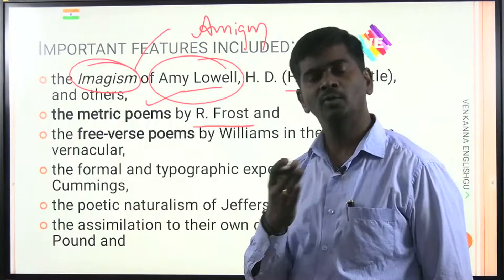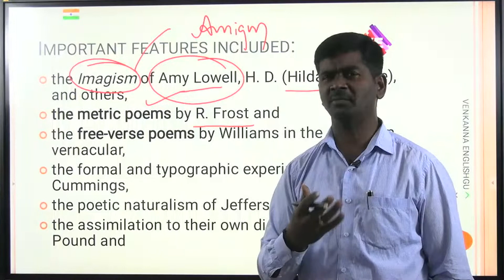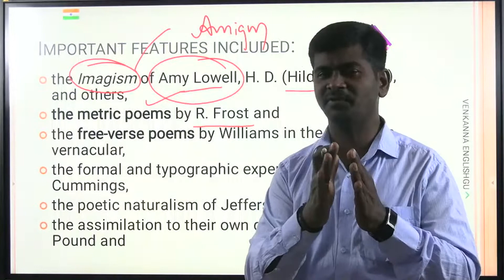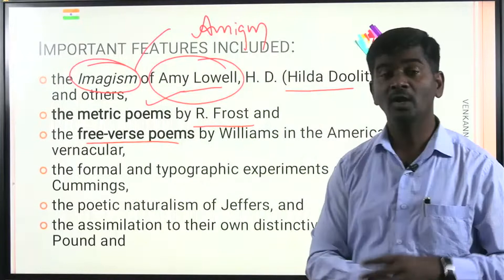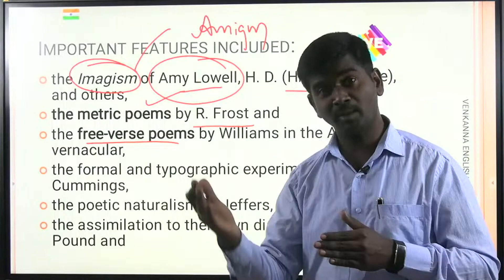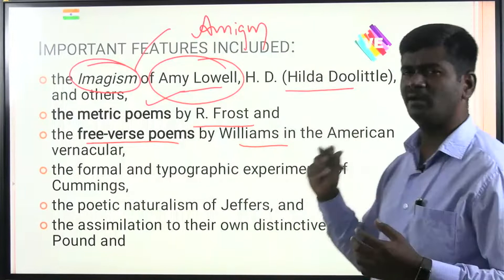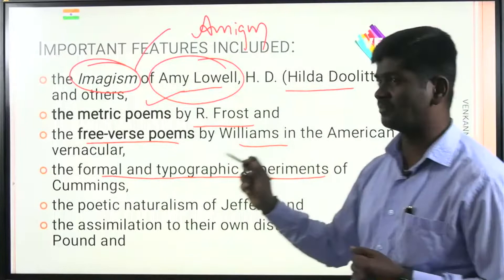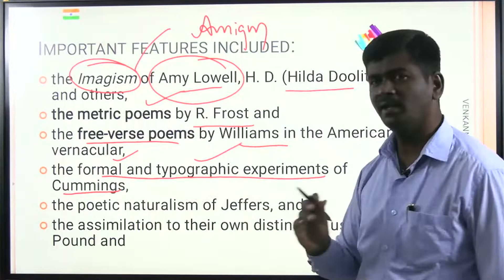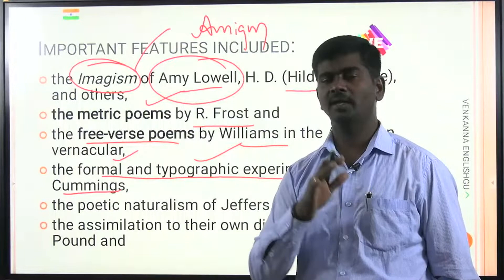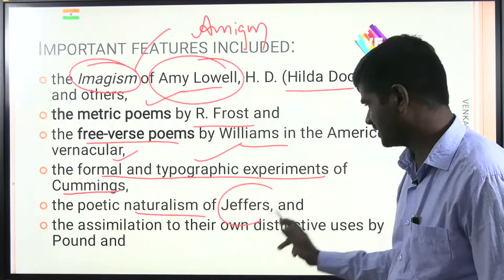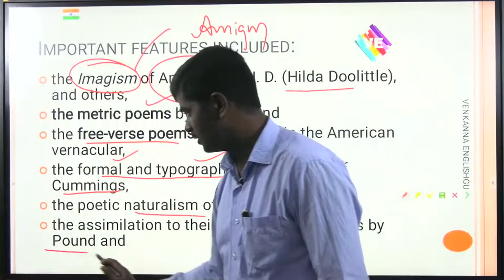Metric poems were popularized by Robert Frost — he is the originator of metric poetry, using different meters such as iamb, anapest, trochee, and various prosodic features. Free verse poems are also important — 'The Waste Land' is composed in free verse. Free verse poetry was also composed by William Carlos Williams in American literature. E.E. Cummings is known for formal and typographical experiments, deliberately violating conventional spelling and form.